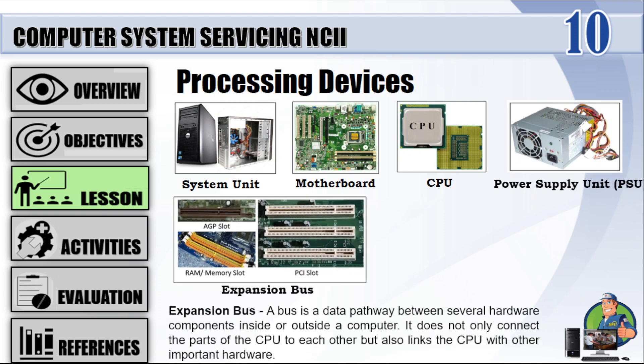Expansion Bus: A bus is a data pathway between several hardware components inside or outside a computer. It not only connects the parts of the CPU to each other but also links the CPU with other important hardware. Examples of expansion bus slots: AGP slot, memory slot, and PCI slot.